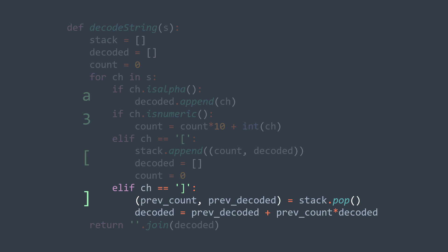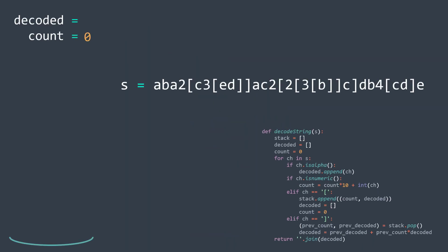In brief, it's like going back to the previous level and taking the data stored for that level, because each item in the stack represents one level of depth. After the loop, we join the characters and return the decoded string. Now that we know how the algorithm works, let's apply it on the example from this video.